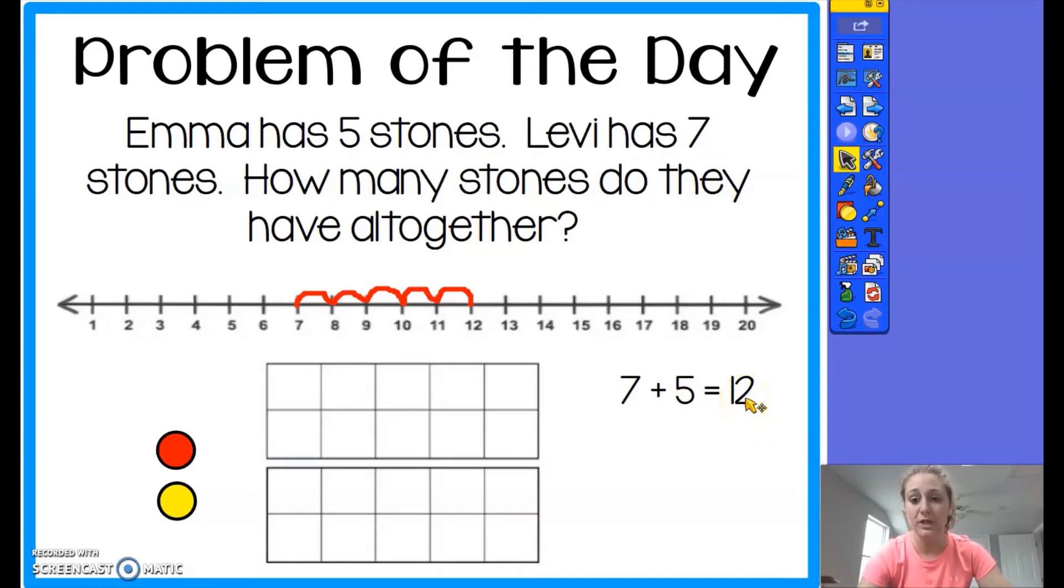Another strategy could be through using a twenty chart. A tens frame would just be one of them, but because we're using two of them it's now called a twenty frame. I could show Emma's five with the red.